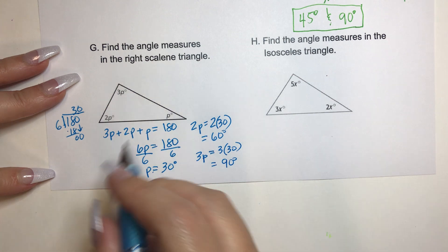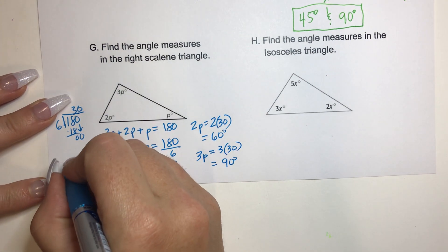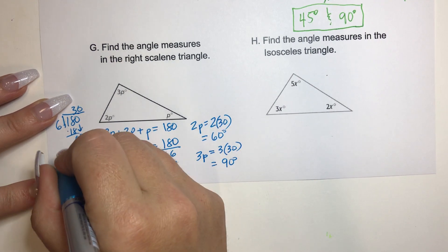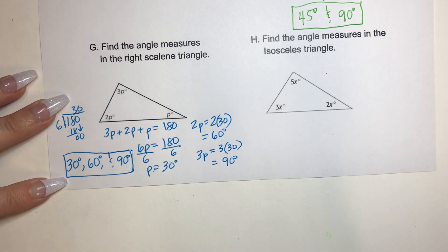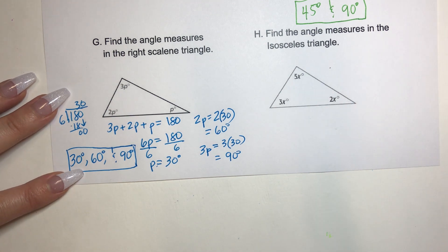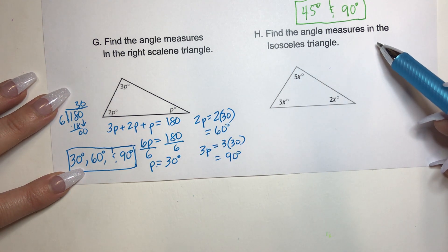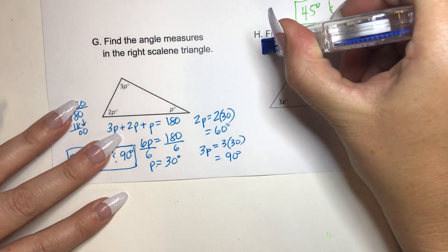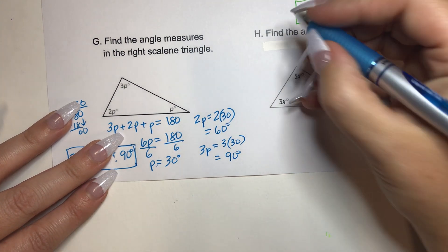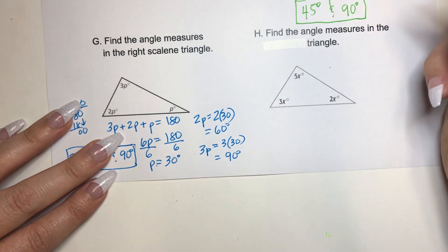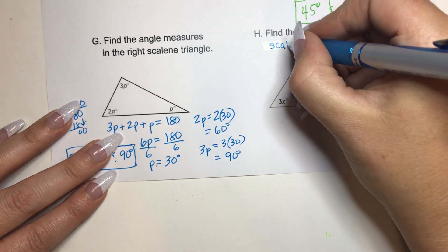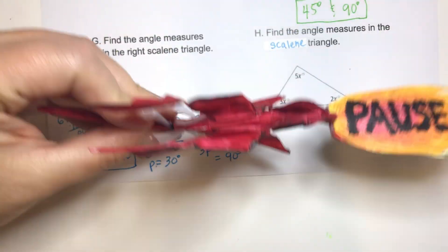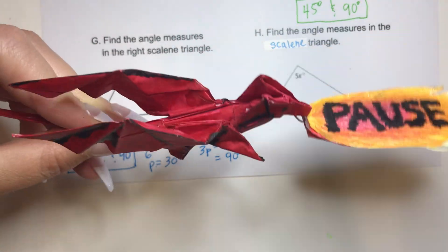So the angles for that scalene triangle are 30 degrees, 60 degrees, and 90 degrees. The problem label says isosceles but this is actually a scalene triangle — every angle is different. Now I want you to try the next one on your own. Pause your device, work out the problem, then press play and we'll talk about it.